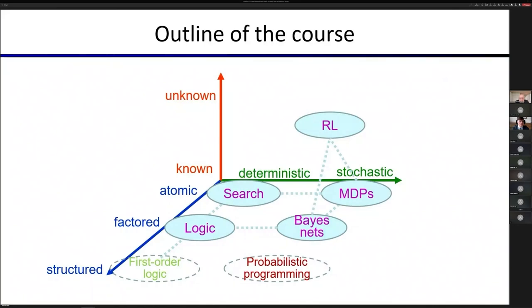Factored representations are where the state of the world is broken down into, if you like, a vector. So a set of features. And propositional or Boolean logic has that characteristic. Neural networks also have that characteristic. And then the structured representations are things like first order logic, or in general computer programs, where the state of the world is a much more complex structure rather than thinking of it as a vector of bits. Think of it as a representation in terms of objects, relations among those objects, function symbols connecting objects to objects, and so on.